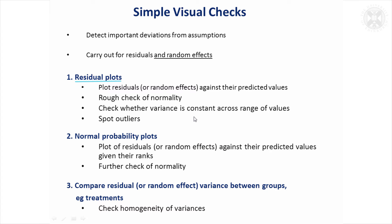using the usual things, residual plots, normal probability plots, I think are sufficient to detect important deviations from normality. But the key thing to remember is you need to do these not just for the residuals themselves but you need to do them for the random effects. So in the case of a residual plot, you would plot the random effects themselves against their expected predicted values.